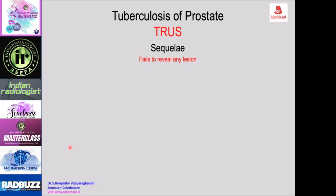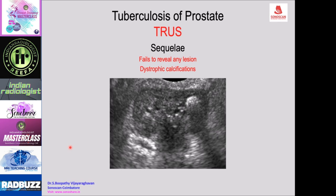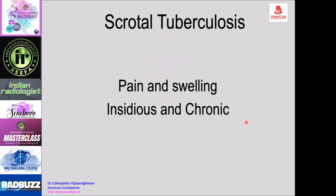A sequela of tuberculosis of the prostate is dystrophic calcifications. Dystrophic calcifications may be seen in the prostate, which is again a non-specific feature.